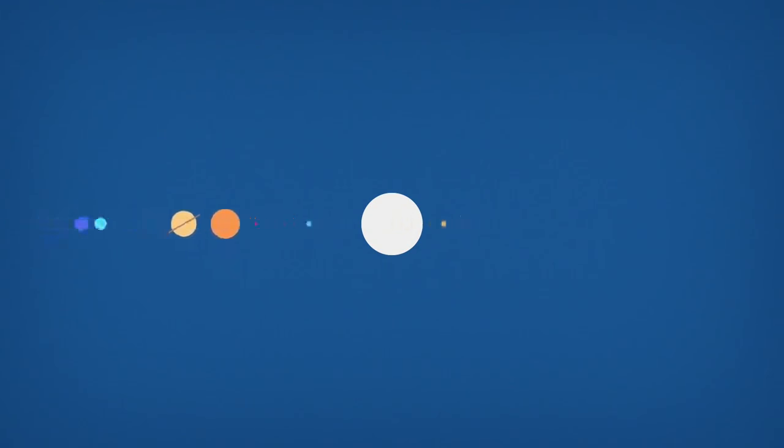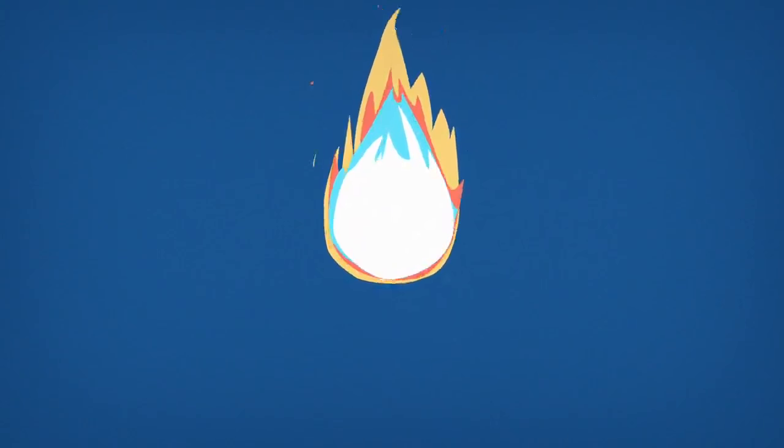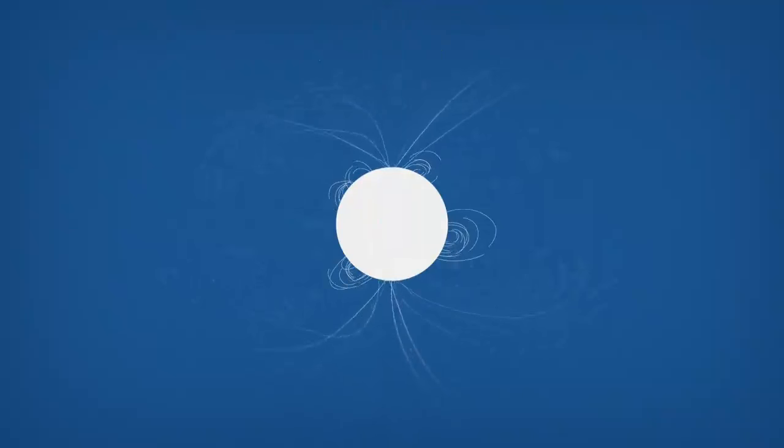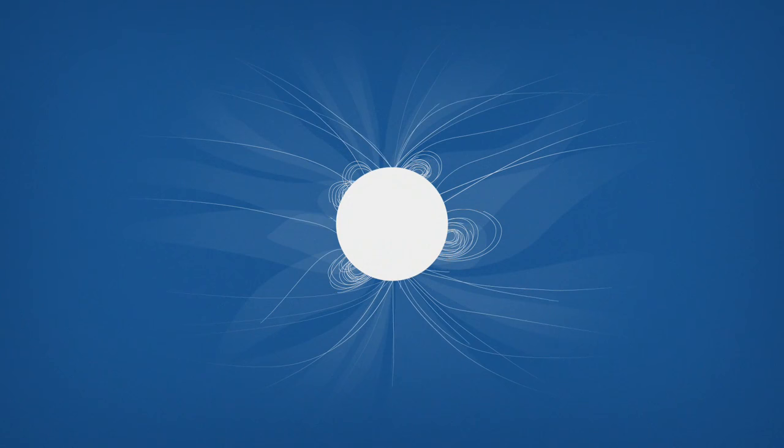Scientists have now spotted signs of a structured boundary between the Sun and the rest of the solar system. The Sun is not a hard ball in space, nor is it a giant ball of fire. Instead, it's a mass of charged particles and magnetic fields.